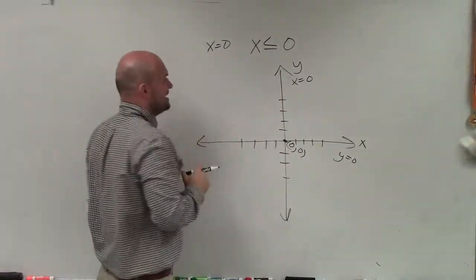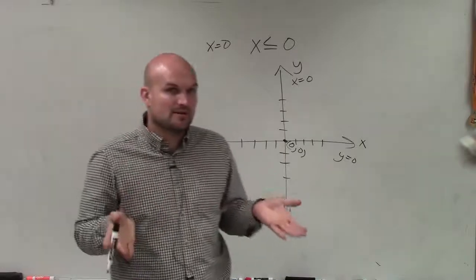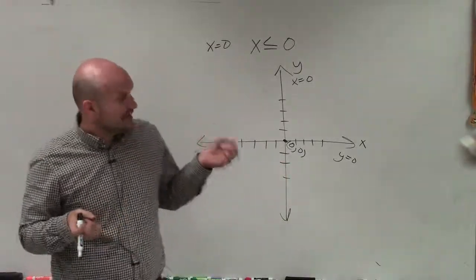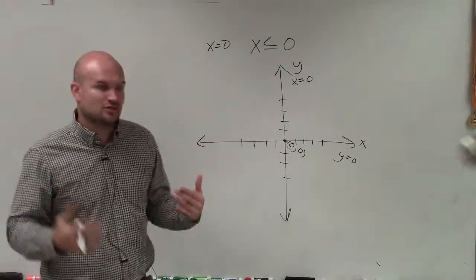Now, when we graph the line x is less than or equal to 0, we're pretty much taking the exact same line x equals 0, but then we need to identify what about the shading.